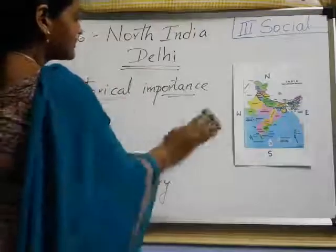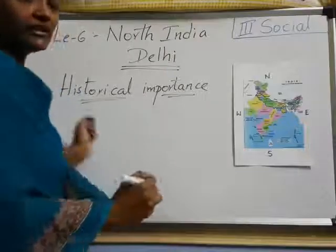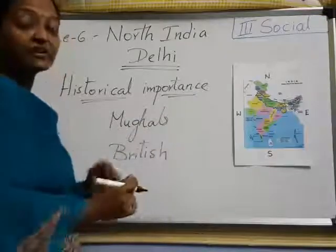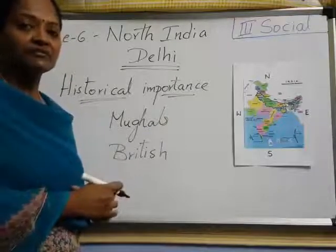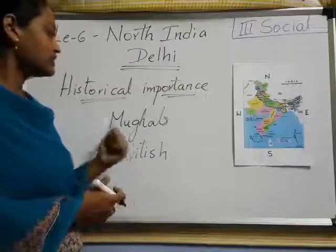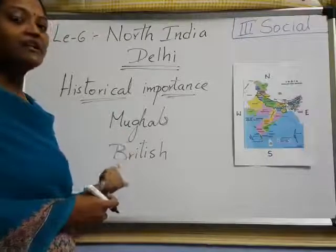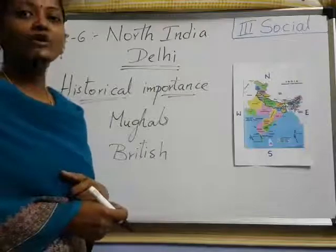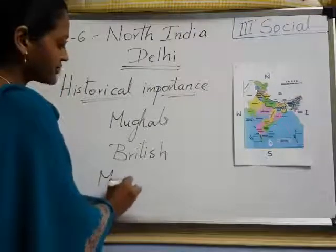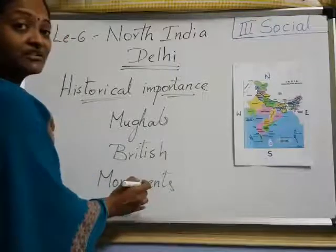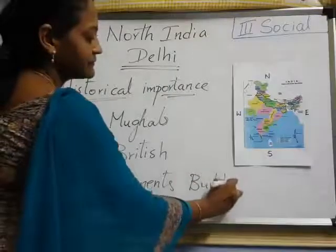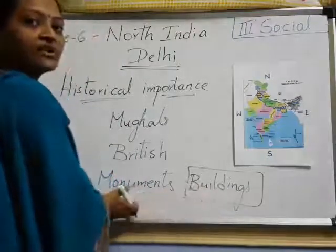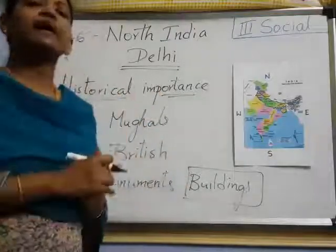In the ancient times, some rulers ruled Delhi — that is the Mughals. And also British. You know this one, right? British people ruled our country for more than 200 years. They ruled our country India. So here, Mughals and British ruled in the ancient times in Delhi. And at that time, they built so many monuments. Monuments means — look here — monuments means buildings. They are constructed so many years back. Then we call it as a monument. It is still there.